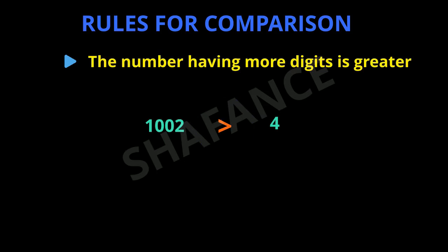Let us take one more example. The first number is 762 and the second number is 89. So 762 has 3 digits and 89 has 2 digits. So 762 has more digits, therefore it is greater than number 89. As we have seen in the counting, the number which comes later on has more digits and it is greater.